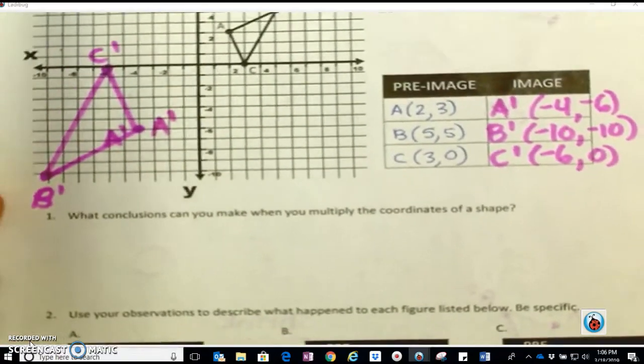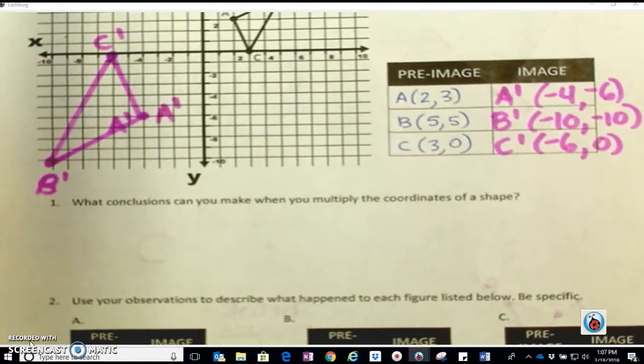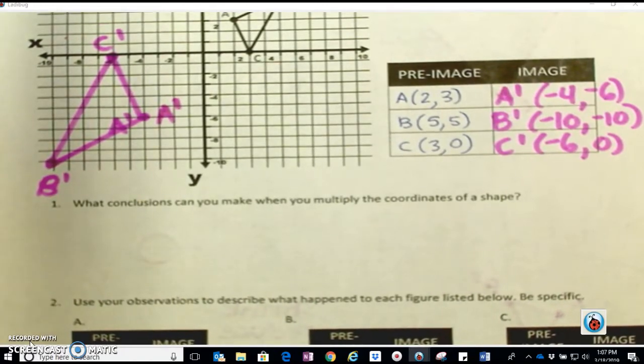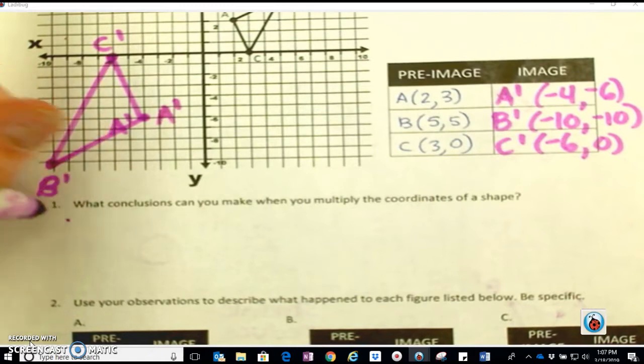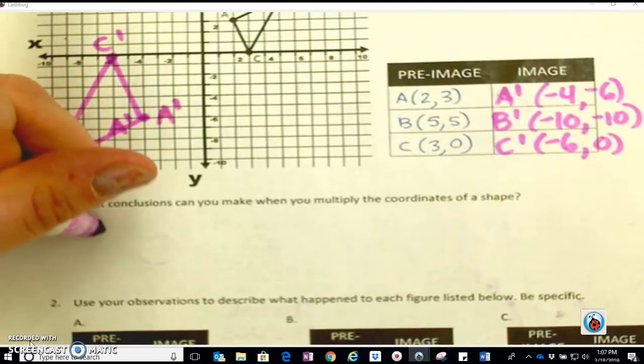Then we are asked, what conclusions can you make when you multiply the coordinates of a shape? When we multiplied by a number that was positive and greater than one, it can get larger.